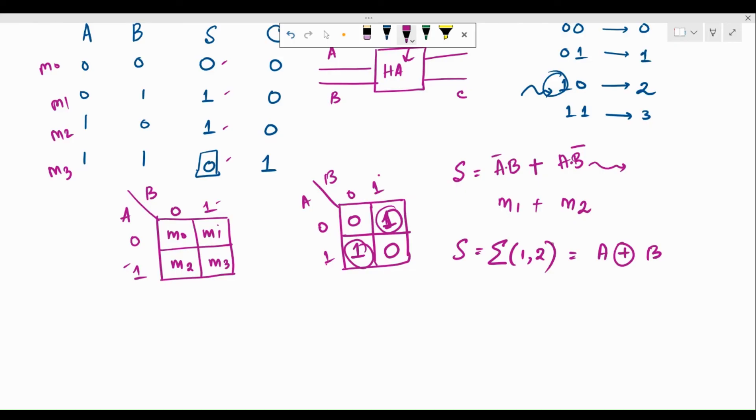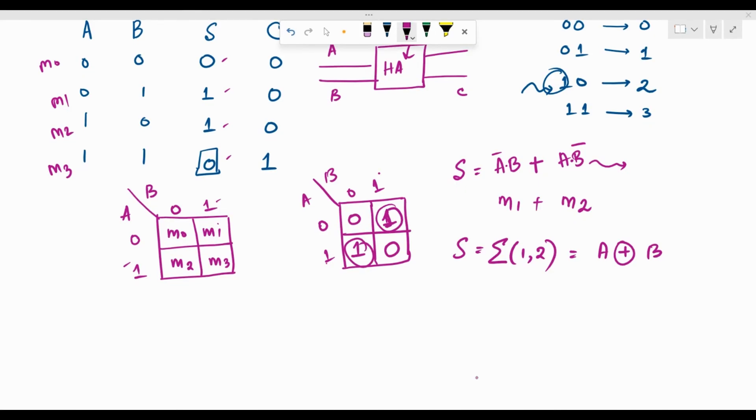So, this is the expression for the sum. In the same way, we can compute the expression for the carry. So, let's draw the grid again. From the truth table itself, we can find out the expression because the value of C is true only for minterm 3.